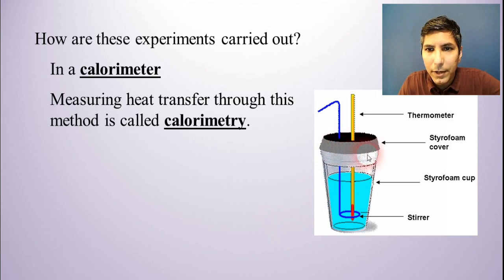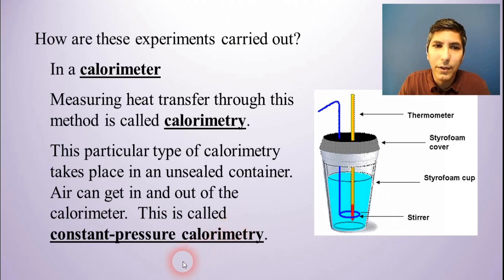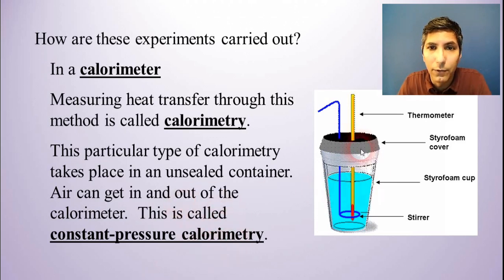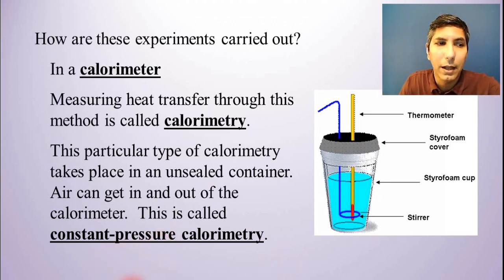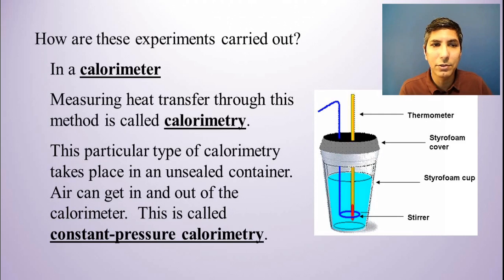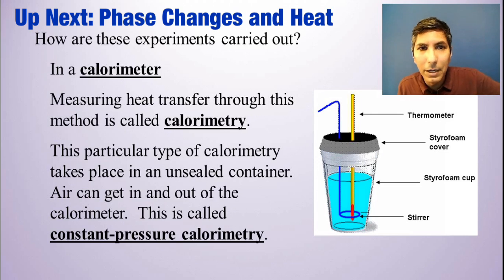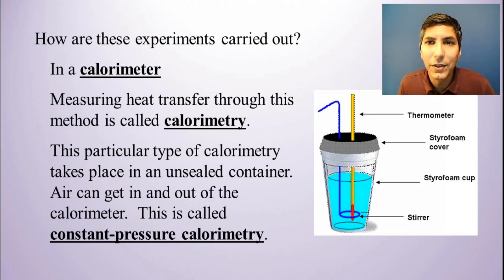Even though this styrofoam cup might be closed, it's not actually sealed — air can still get in and out of the calorimeter. This is even more so the case in everyday chemistry labs where we might not even have a styrofoam cover on top and just leave the cup open. This is called constant pressure calorimetry. There is a different type where everything is sealed up, called constant volume calorimetry, but that type is not addressed in AP chemistry. I hope you enjoyed and learned something from this video about Q equals MC delta T. Please slam that thumbs up button, and I hope to see you in my next video where we move on to unit 6, section 5.